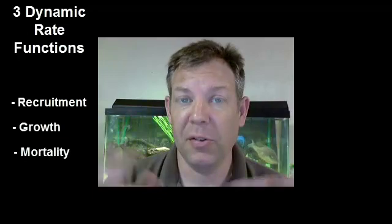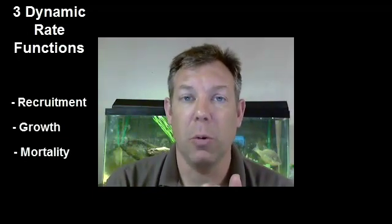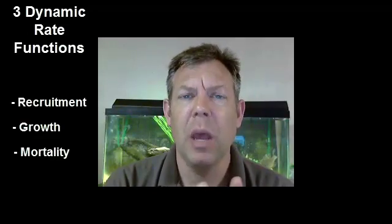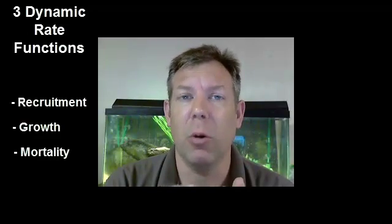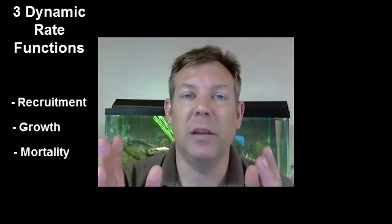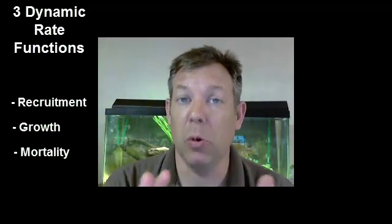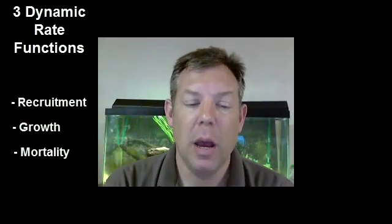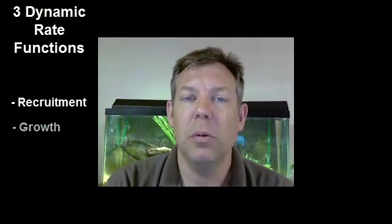Recruitment is births — when fish are born, they're recruited to the population. In fisheries, we also have a different meaning for recruitment: when fish recruit to the fishery or recruit to the gear. For example, if you've got a 15-inch minimum length limit, when that fish gets to be 15 inches, it recruits to the fishery. Growth is growth, and mortality is mortality. If you can measure these three rates, then you can understand your population.